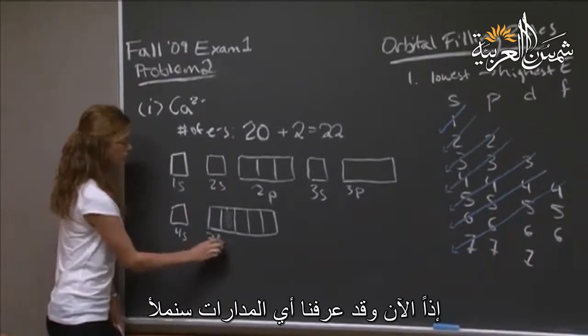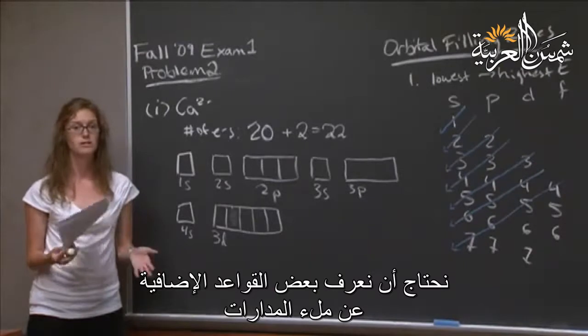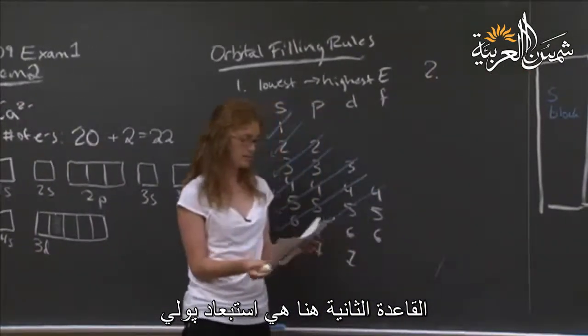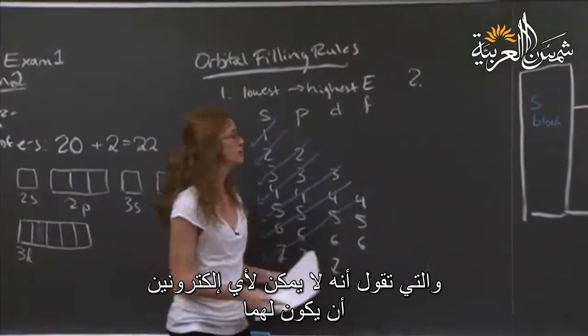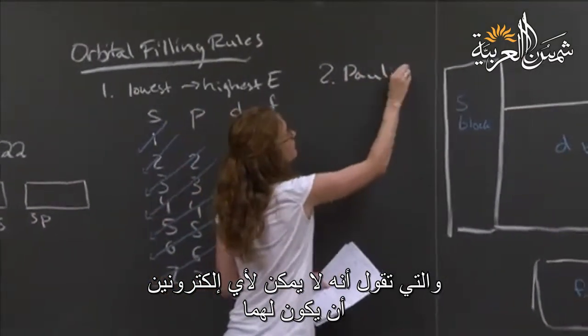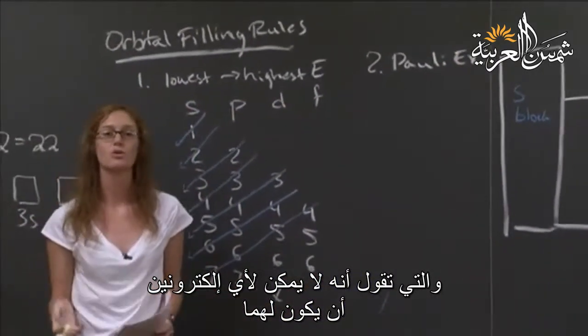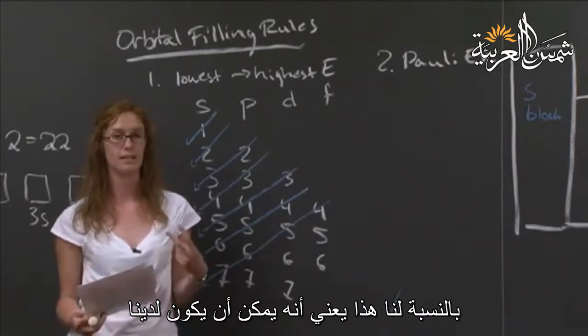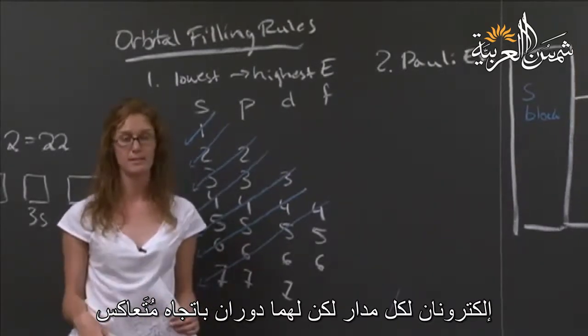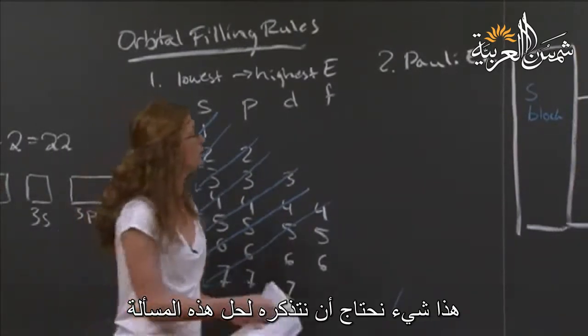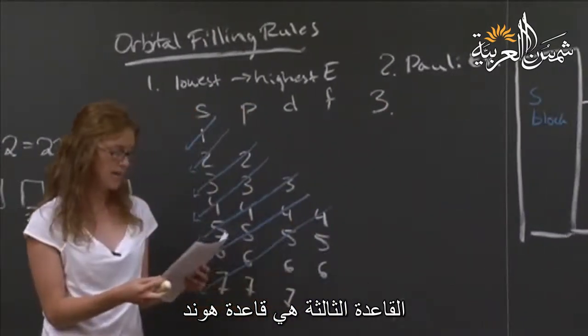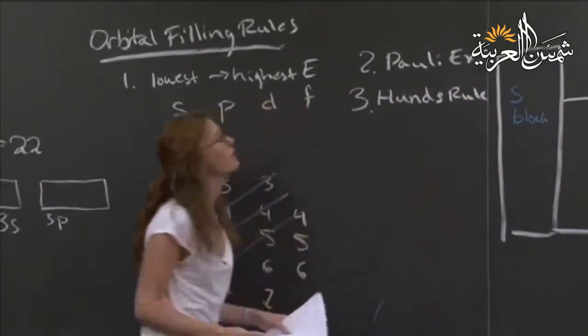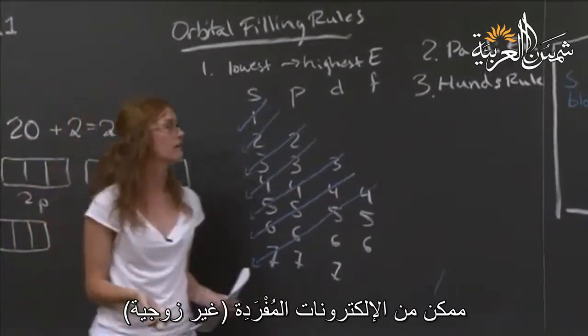Now that we know which orbitals we're going to fill, we need to know some more rules about filling them. So the second rule is the Pauli exclusion principle. It says that no two electrons can have the same quantum numbers. For us, that means that we basically can only have two electrons per orbital and of opposite spin. The third is Hund's rule, and that is we want to have as many unpaired electrons as possible.